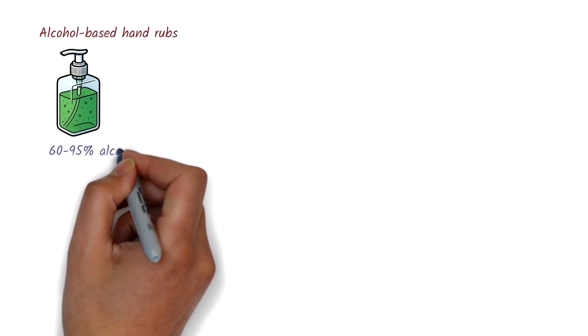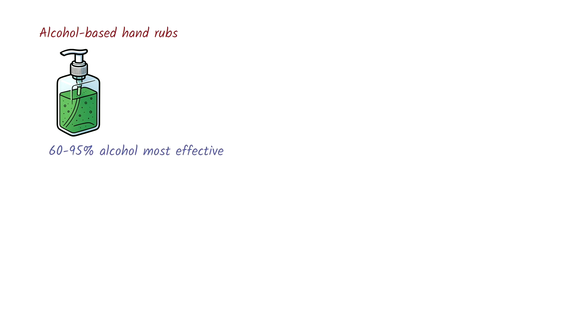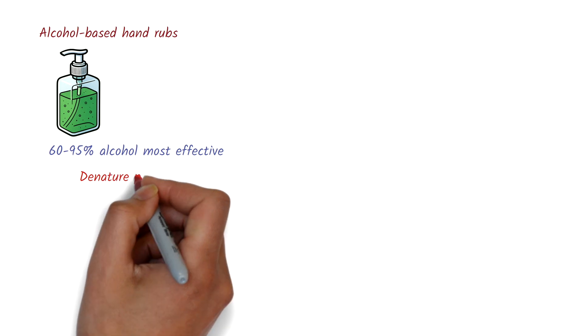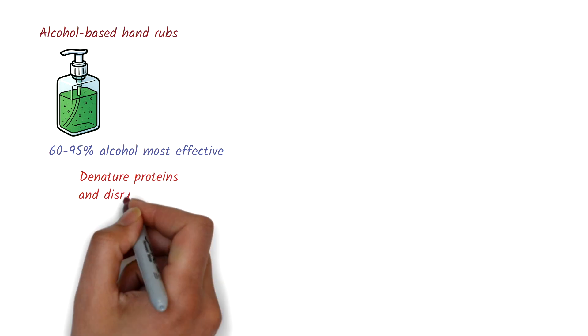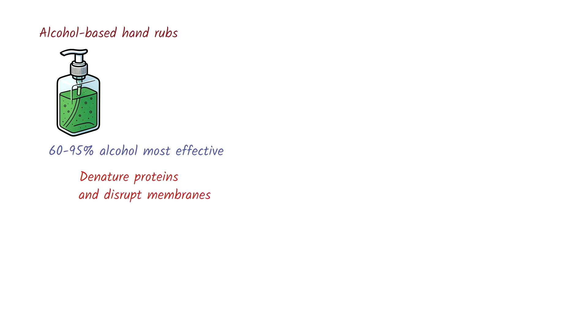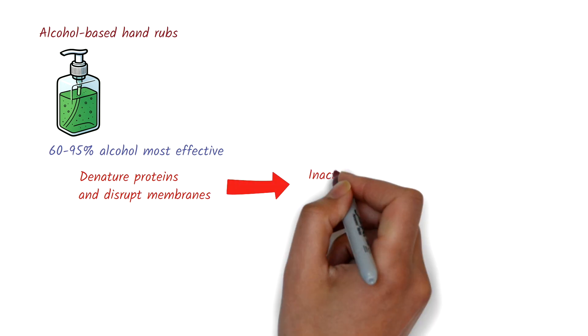Let's have a look at alcohol-based hand rubs. Solutions with 60-95% alcohol are most effective. They work by denaturing microbial proteins and disrupting lipid membranes. This results in the inactivation or death of pathogens.